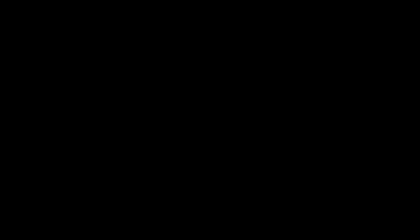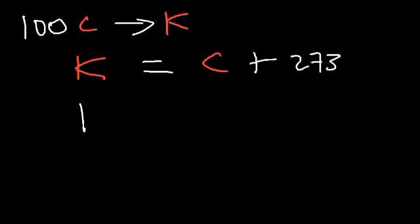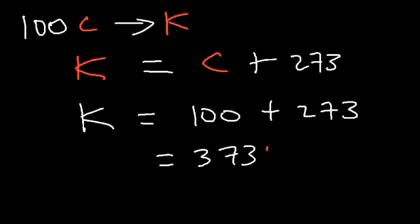Now we need to convert the Celsius temperature to Kelvin. The equation is: Kelvin equals the Celsius temperature plus 273.15. Most of the time you can use just 273. So 100 plus 273 is 373 — that's the Kelvin temperature. To convert from Celsius to Kelvin, simply add 273.